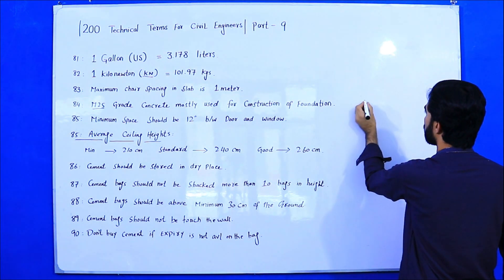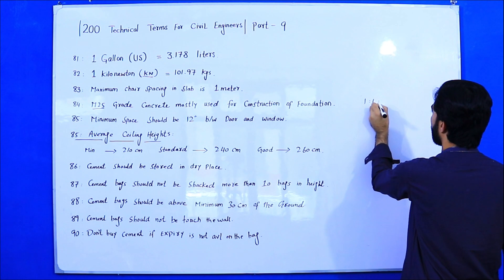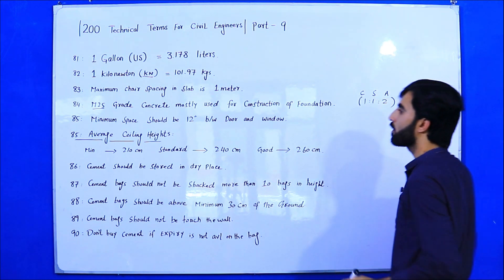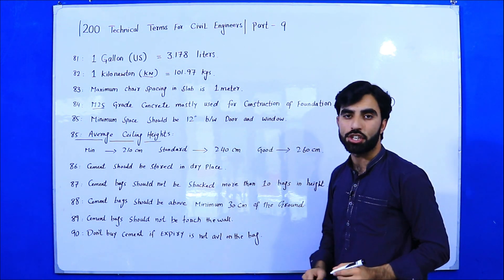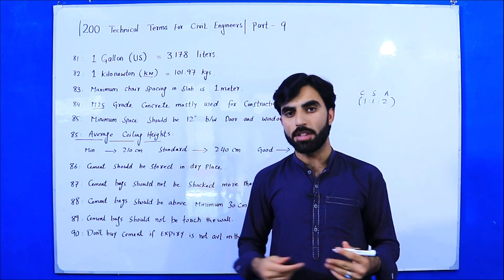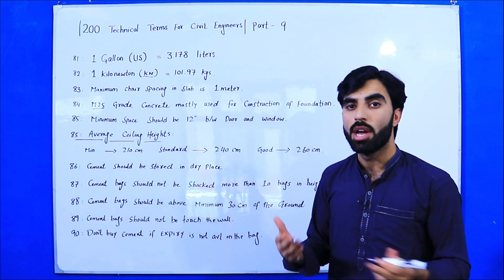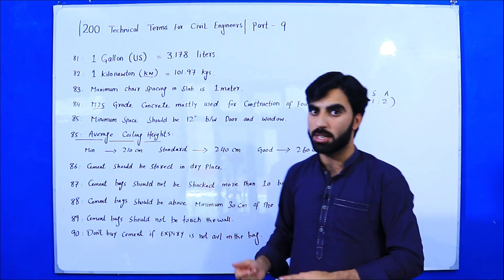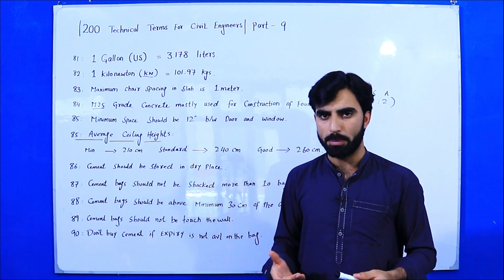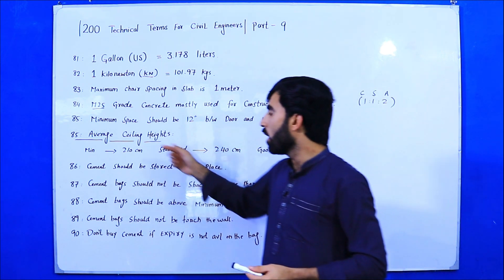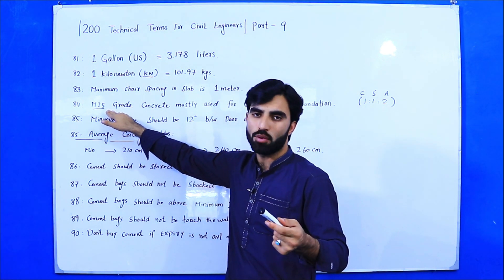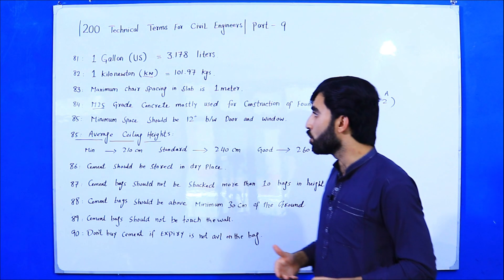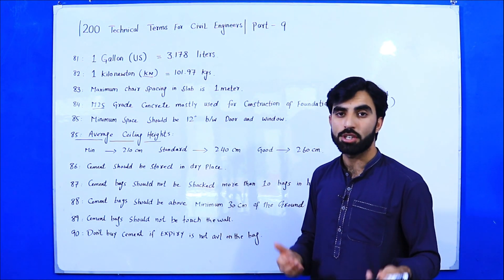Term number 84: M25 grade concrete. The ratio of M25 grade concrete is 1:1:2 — one part cement, one part sand, and two parts crush or aggregate. M25 grade concrete is mostly used for the construction of foundations. A strong foundation means a safe building. I recommend using M25 grade concrete for both commercial and domestic building foundations, and it is commonly used in government works.